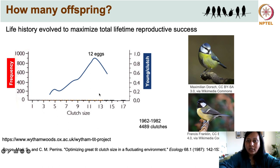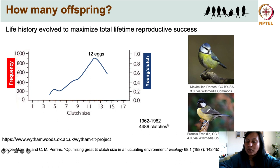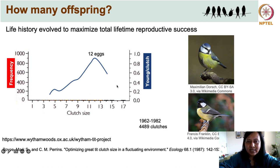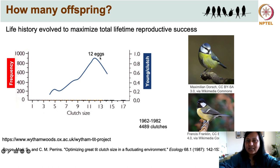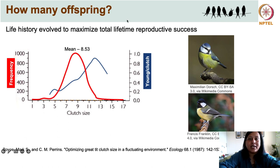The results referred to here come from monitoring great tits and blue tits over a 20-year period between 1962 and 1982, during which 4,489 clutches were monitored. When they looked at the distribution of clutch sizes, they found that 12 was the optimal clutch size — meaning 12 was the maximum number of eggs for which the greatest number of offspring fledged and went on to survive.